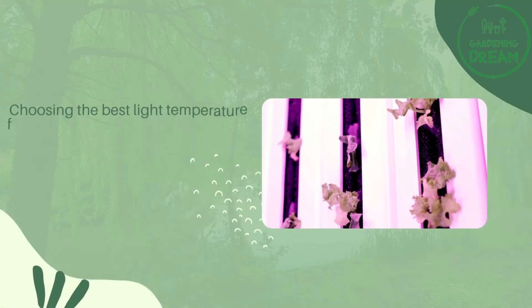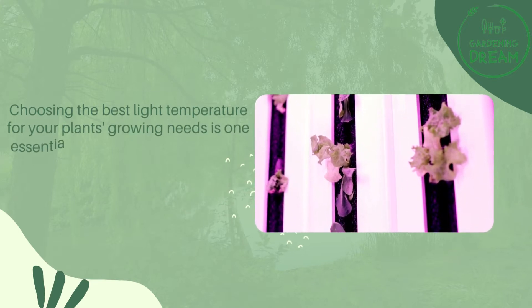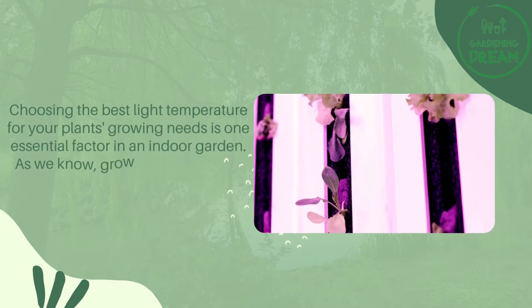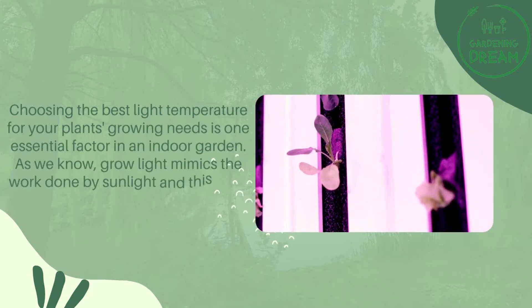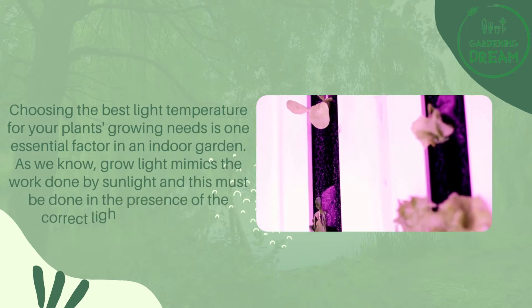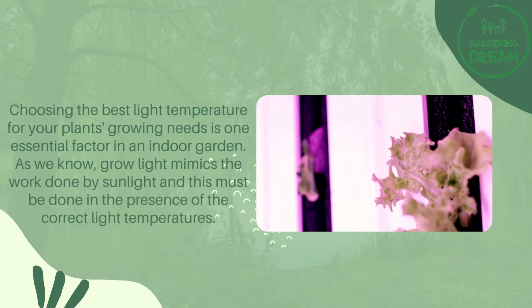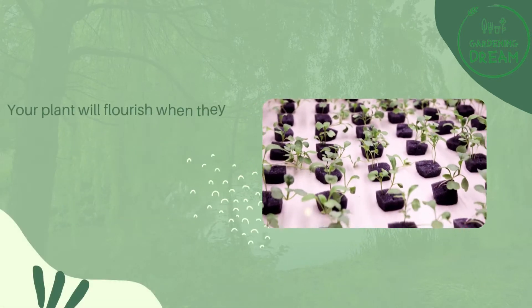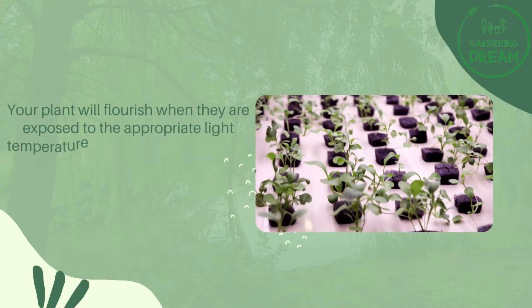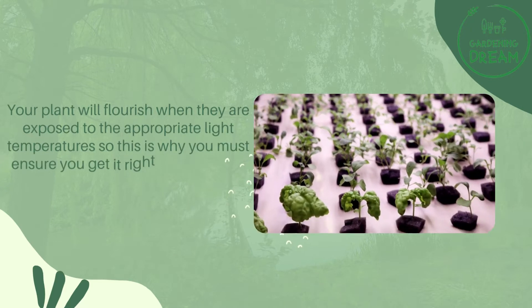Choosing the best light temperature for your plants' growing needs is one essential factor in an indoor garden. Grow light mimics the work done by sunlight, and this must be done in the presence of the correct light temperatures. Your plant will flourish when exposed to the appropriate light temperatures, so you must ensure you get it right.